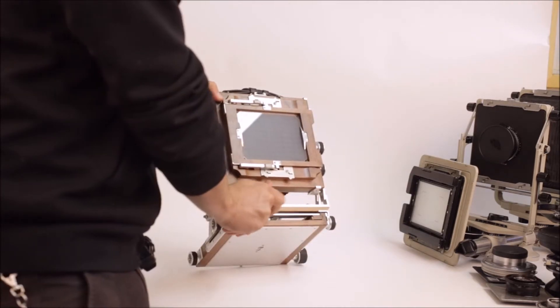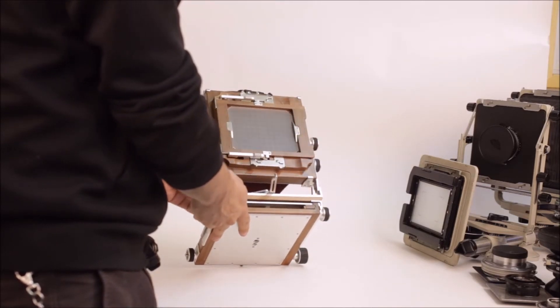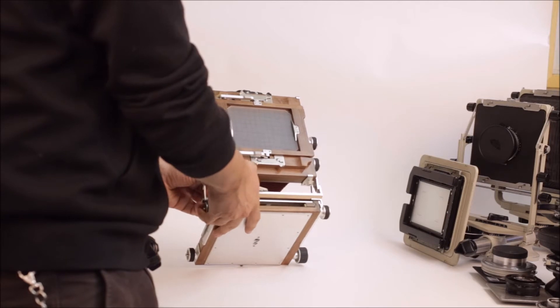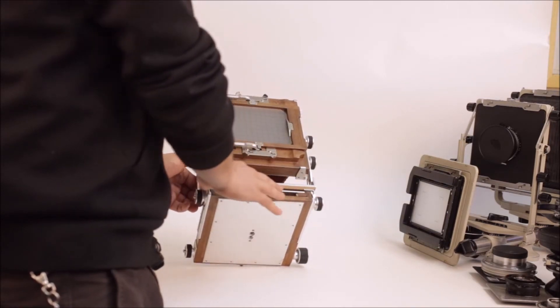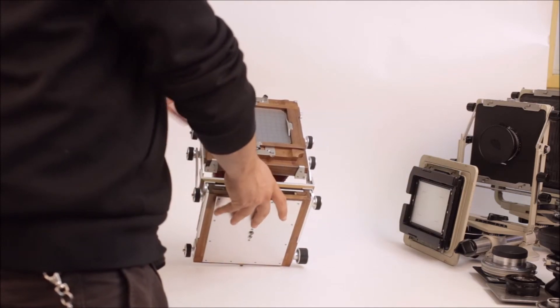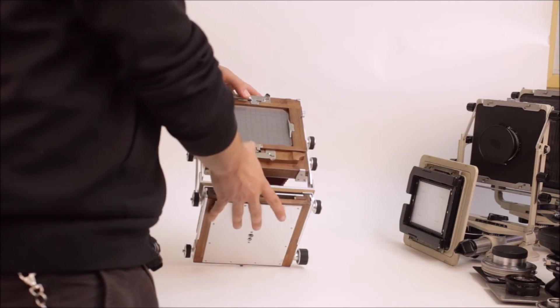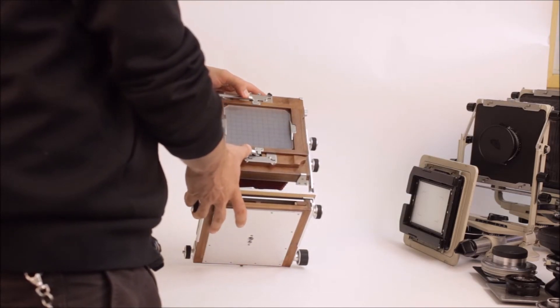The rear swing mechanism is very robust and very easy to use. It's very smooth and tight, and it locks very nicely without a lot of pressure. There's no rear shift on this camera, which is, again, regrettable. But out of all the movements that we have, this camera has pretty much everything you need, with the rear rise being probably one of the most useful movements on a view camera.